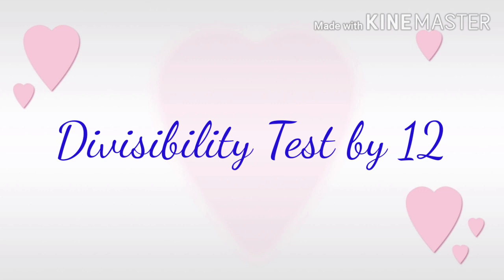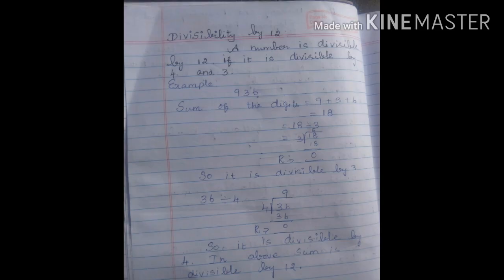Good morning, 5th standard students. Today, we are going to talk about Divisibility by 12. Let's talk about examples and exercise sums. In this class, we will talk about rule 10 and rule 11.